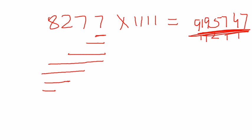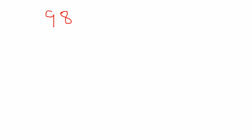Before we finish, let's discuss examples with order mismatch — where the number of digits doesn't match the number of 1s. For example, 98 × 111: 98 has 2 digits but 111 has three 1s. We follow the same steps, but the bar goes up to a maximum equal to the number of 1s present in the question.